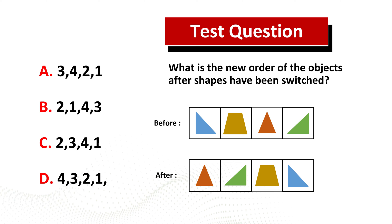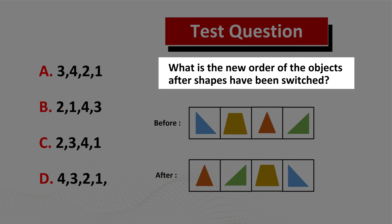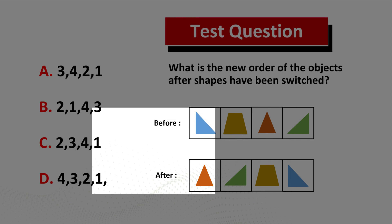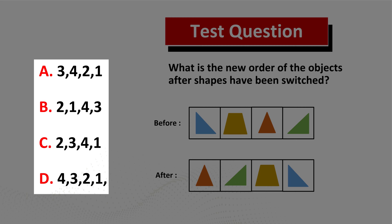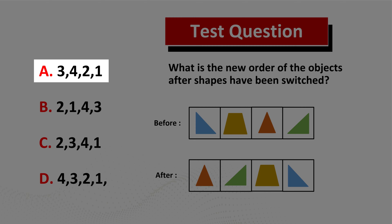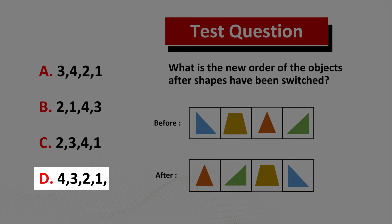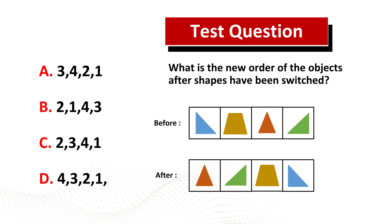Some of you might find this question tricky, but regardless of whether you can come up with the solution on your own, you will be excited to learn the solution to this real life assessment test question. What is the new order of the objects after shapes have been switched? You're presented with a before picture of four objects and an after picture of the same objects in a different order, and four different choices: choice A three four two one, choice B two one four three, choice C two three four one, and choice D four three two one. Do you think you know the answer?